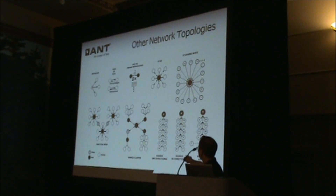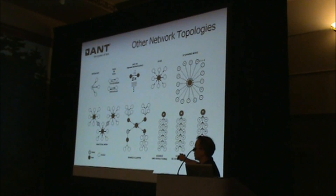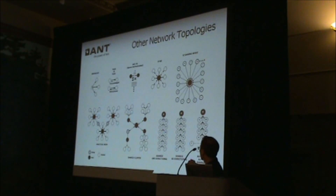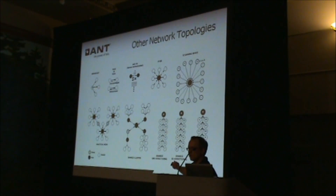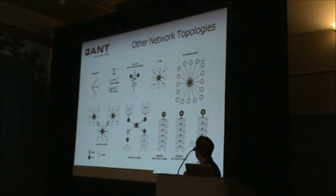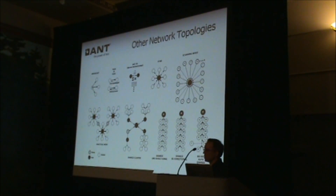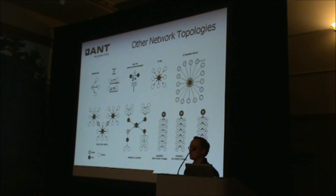Over here I have the unidirectional shared channels where they're just broadcast messages to all the slaves. Then I have bi-directional ANT channels where you can actually address each slave individually and send a different message to each node on a channel period. And this last one is the ad hoc auto-shared channel where you have a handshaking procedure to assign an address to the slave.